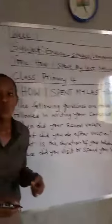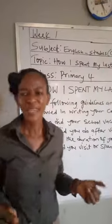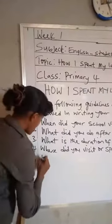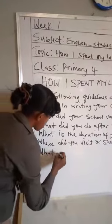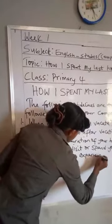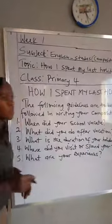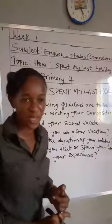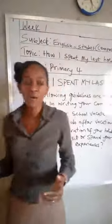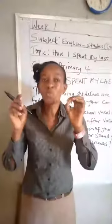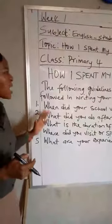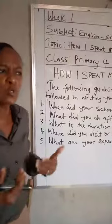Another question we need to address is: where did you visit or spend your holidays? And the last one is: what were your experiences? What are your experiences where you visited or where you spent your holidays? If you spent your holiday at home, you must surely have one or two things that you experienced. Maybe you travelled to see your grandma, your aunt, your uncle — wherever — you must have experienced something new. With the guidelines given so far, if we follow them, we will be able to come out with a perfect composition.